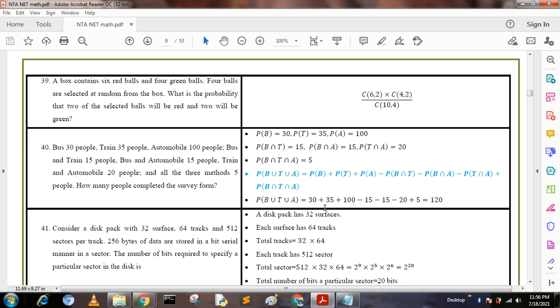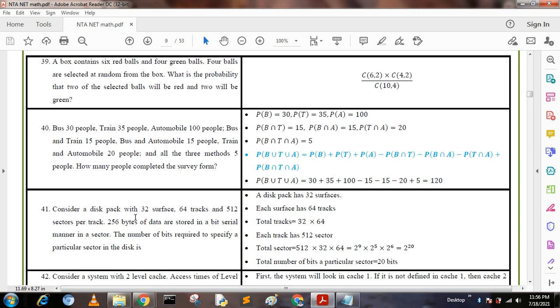Consider a disk pack with 32 surfaces, 64 tracks, and 512 sectors per track. 256 bytes of data are stored in a bit serial manner in a sector. The number of bits required to specify a particular sector in the disk is: